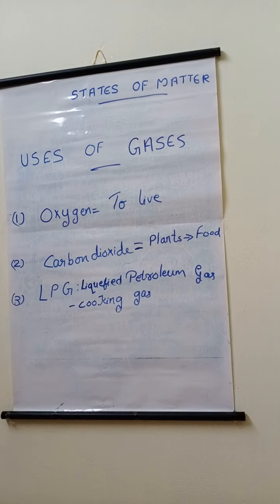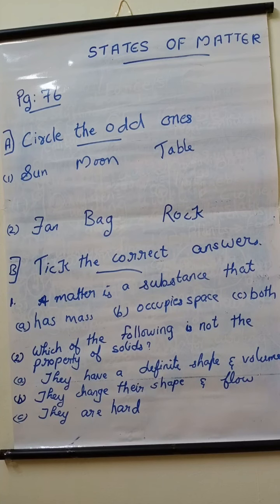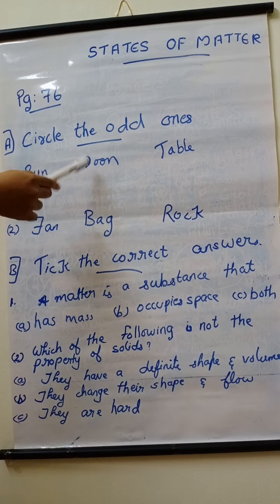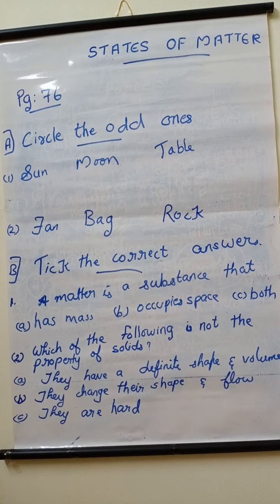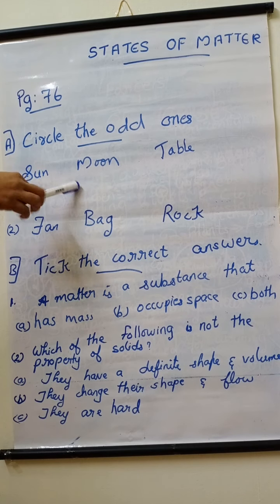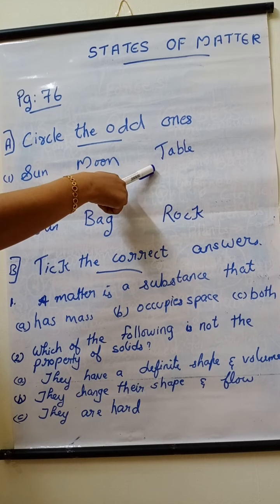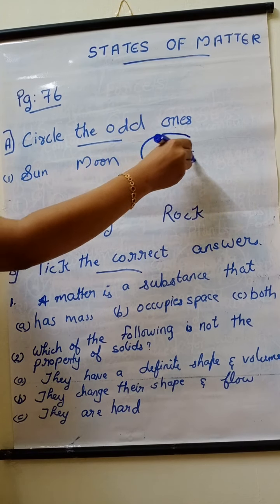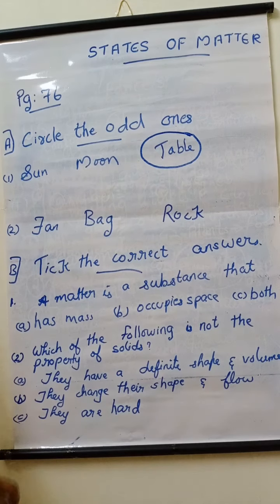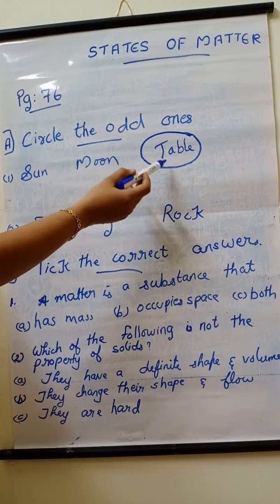Let us solve the exercise for revision which is given in page number 76. Exercise A is circle the odd ones. First one is sun, moon, table. Which one is the odd one? Here sun is a natural thing. Moon is also a natural thing. And table is a human made thing. So obviously table is the odd one. We have to circle the odd one. The reason is that table is a man made thing. Sun and moon are natural things.